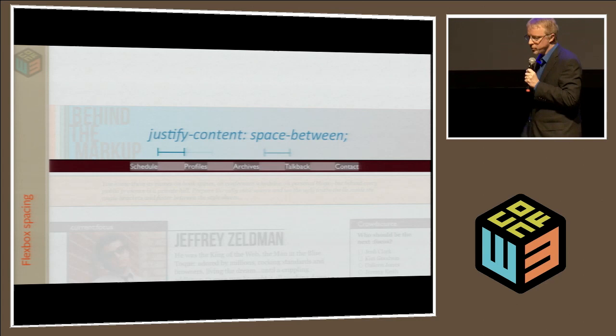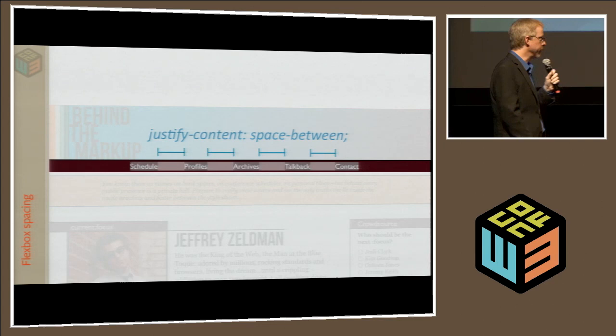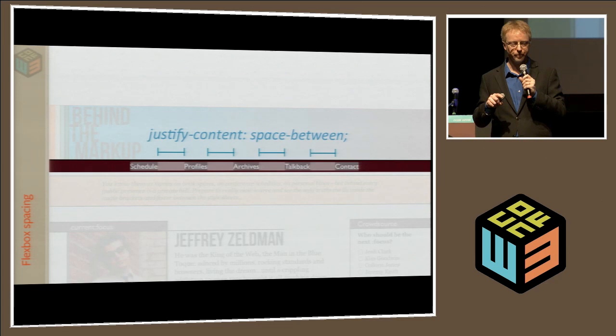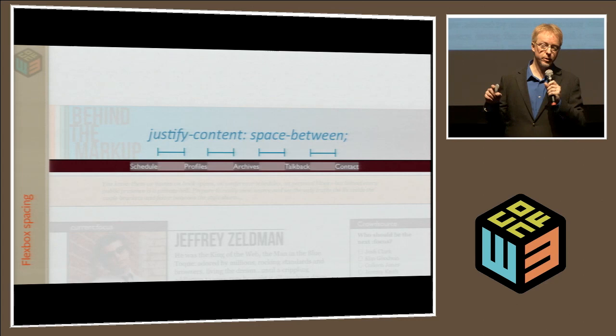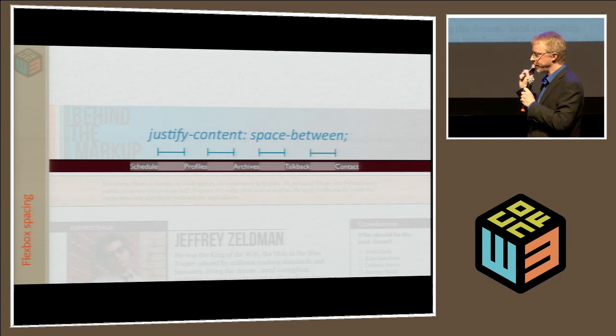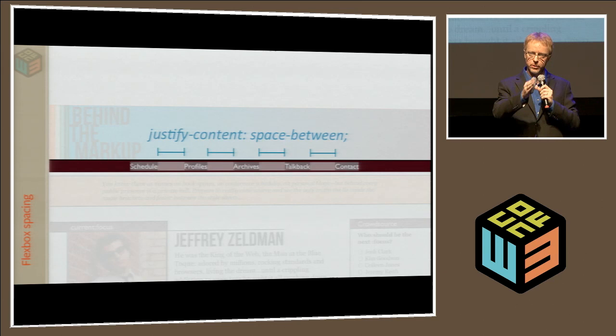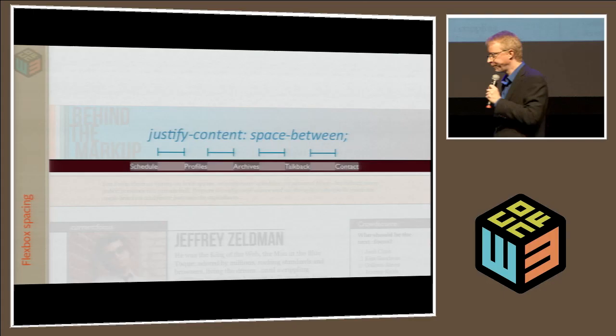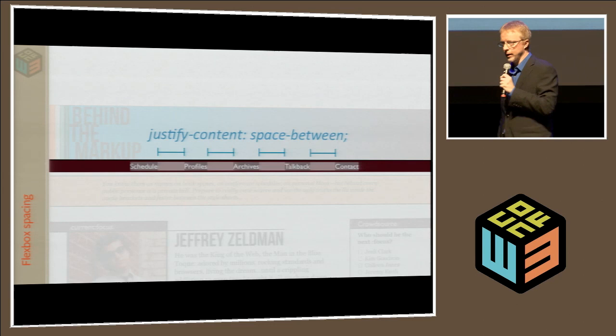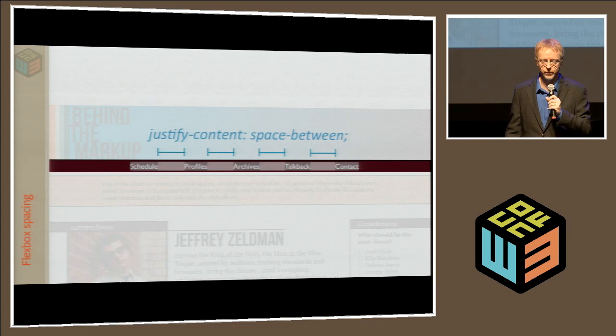This is just a nav element with an unordered list in it, and list items. I said that the unordered list should have a display of flex. That immediately made all of the list items be flexible boxes. And then I said justify-content: space-between, and so it spaced them out automatically with the same space between each one. This is unprefixed in Firefox, and still prefixed in WebKit. There are polyfills — there's flexie.js which helps Internet Explorer deal with whatever it can.